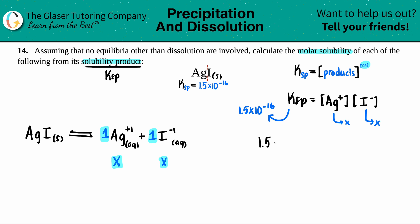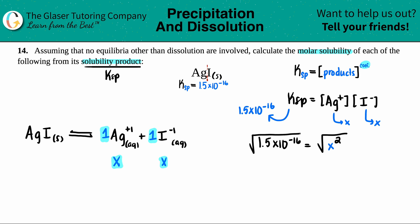Let's start the math. 1.5 times 10 to the negative 16th equals X times X. X times X — I have two X's — so this is the same as X squared. The inverse of squaring is taking the square root. So X equals the square root of 1.5 times 10 to the negative 16th. With two significant figures, that's 1.2 times 10 to the negative 8th. That's in molarity.